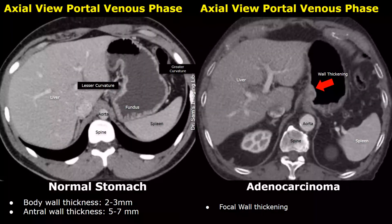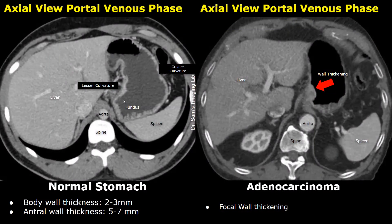The image on the left is from the portal venous phase showing a normal stomach. The stomach wall adjacent to the spleen is the greater curvature, and the stomach wall near the liver is the lesser curvature. This is the fundus, the upper part of the stomach. The stomach parts are more easily seen in the coronal plane.